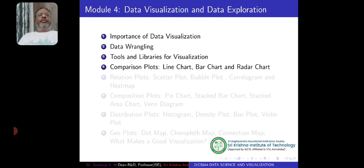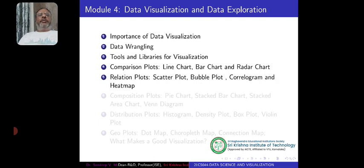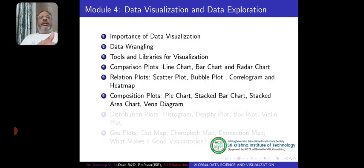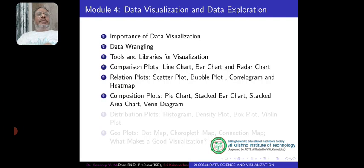The types of plots include comparison plots — used to compare data — such as line charts, bar charts, and radar charts. There are also relation plots like scatter plots and bubble plots. Then there are composition plots that show how a given dataset is made up of each type — such as pie charts, stacked charts, stacked area charts, and Venn diagrams — all conveying the composition of the data.